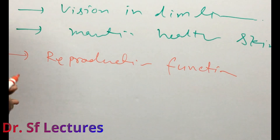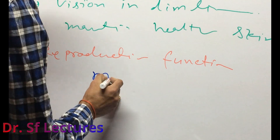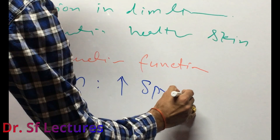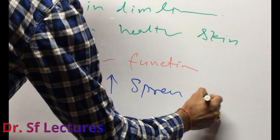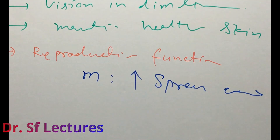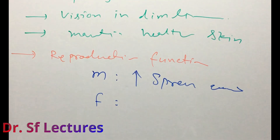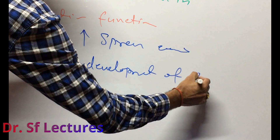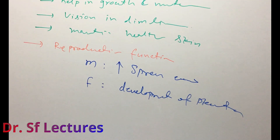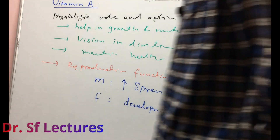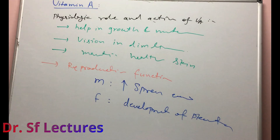Vitamin A also has a reproductive function. In males, vitamin A increases sperm quantity as well as sperm quality. In females, vitamin A helps in the development of the placenta. This is the general physiological role and action of vitamin A.